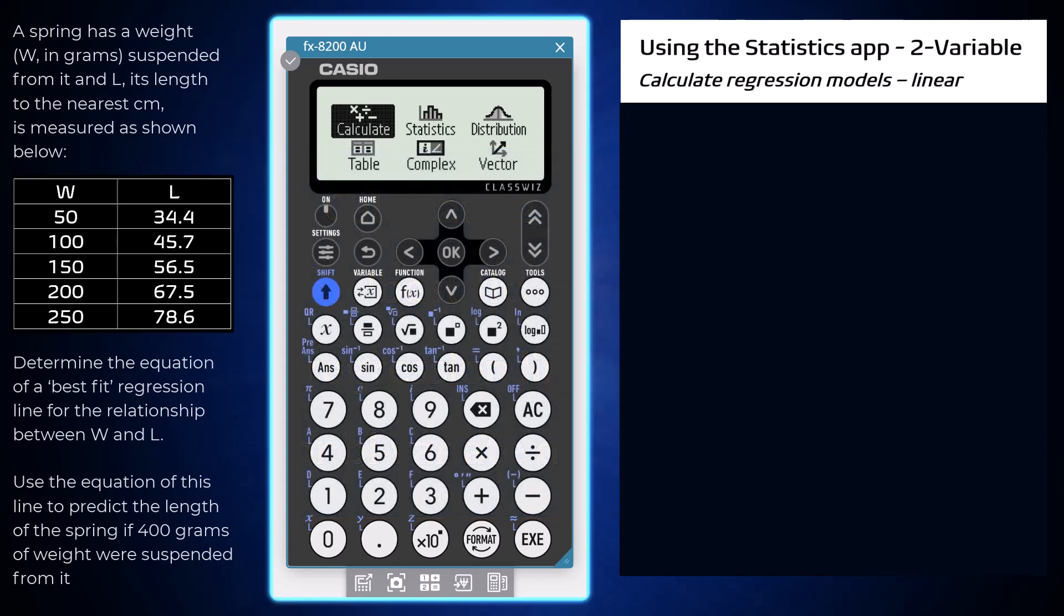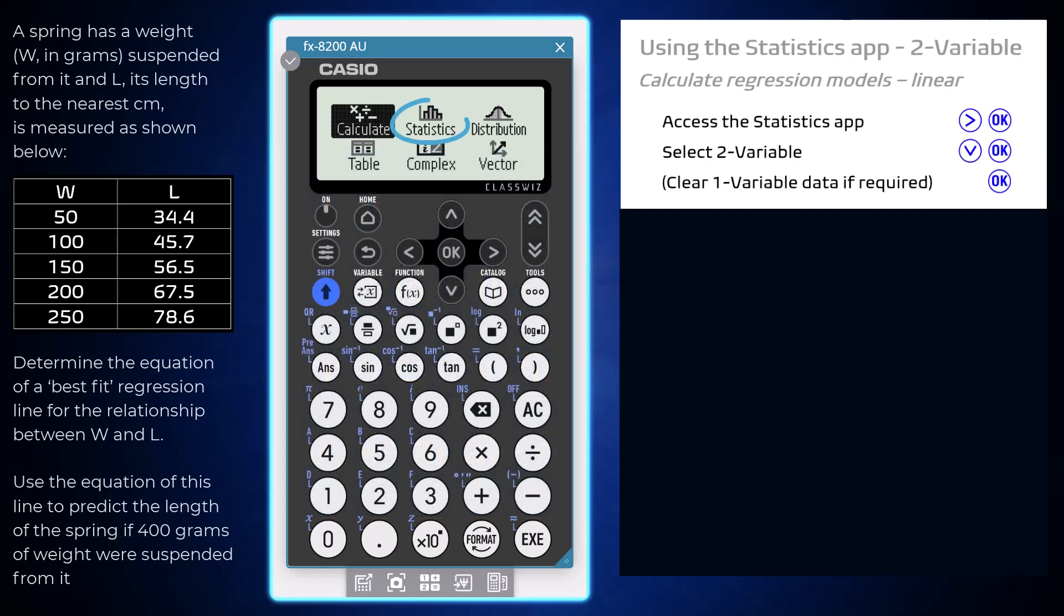To do this, from the home screen head to the statistics app using the arrows to navigate and then selecting by pressing OK. To work with bivariate data in the statistics app, select the two variable option. Select OK to the clearing of one variable data if necessary.